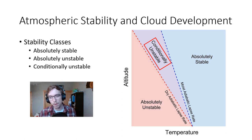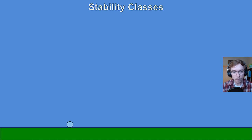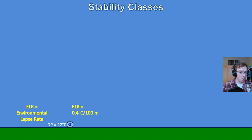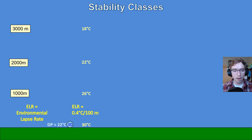If we fall into the realm of conditional instability and we are not saturated, that air will descend; if we are saturated, it will continue to rise. Looking at our stability classes graphically: our air parcel at the surface is 30°C with a dew point of 22°C. The environmental lapse rate (ELR) is 0.4°C per 100 meters, so at the surface it's 30°C, at 1000m it's 26°C, at 2000m it's 22°C, and at 3000m it's 18°C — cooling at a consistent ELR.